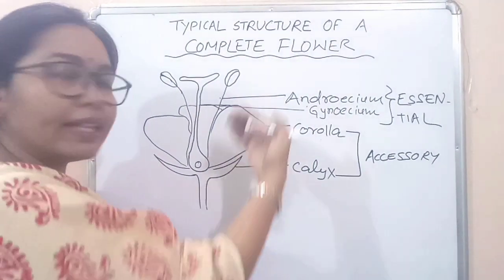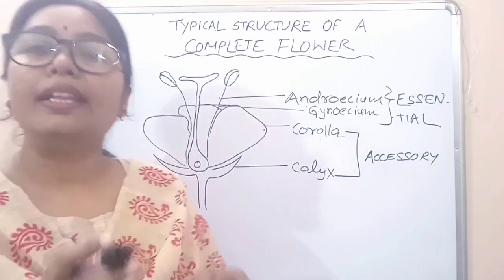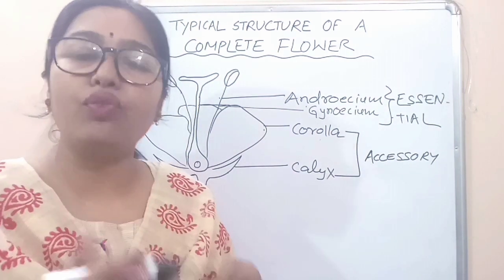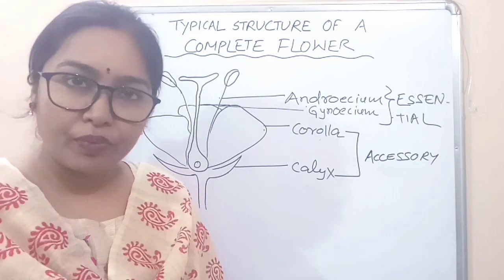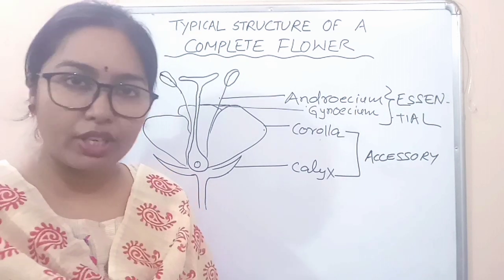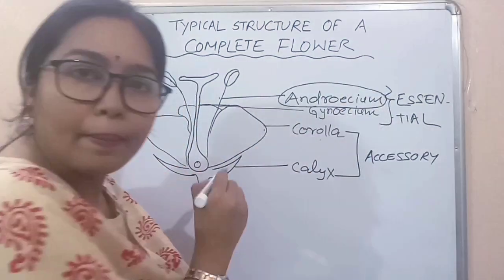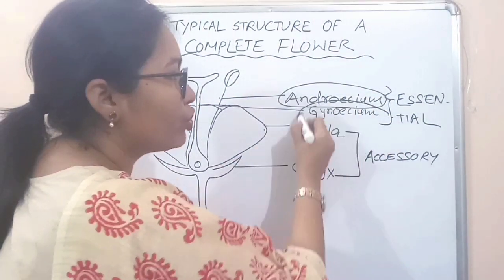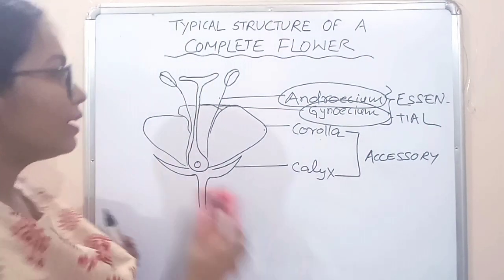So they help in sexual reproduction, but androecium and gynoecium are the essential parts of the flower which carry out sexual reproduction. Androecium is the male part and gynoecium is the female part.